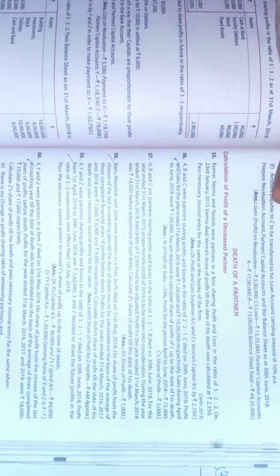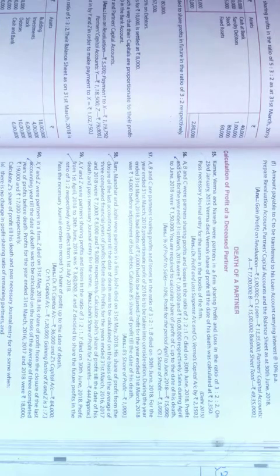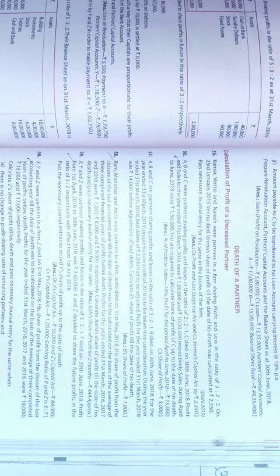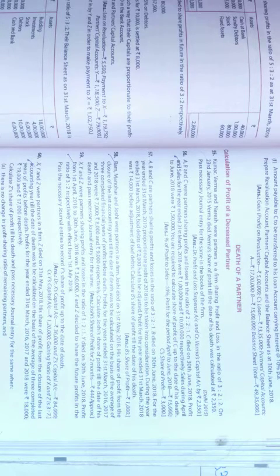A, B and C were partners sharing profit and losses in the ratio of 2:2:1. So there are three partners A, B and C. C died on 30th June 2018. Profit and sales for the year ended 31st March 2018 were 1 lakh and 10 lakh respectively. Sales during April to June 2018 were 1 lakh 50,000. You are required to calculate the share of profit of C up to the date of its death.